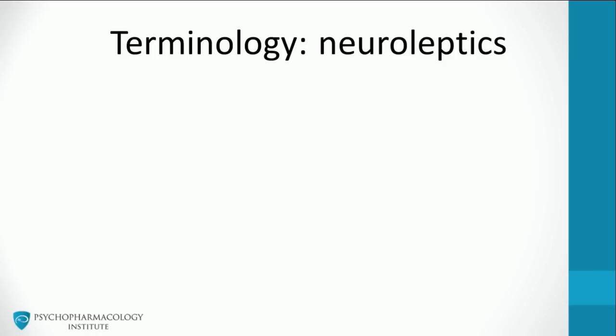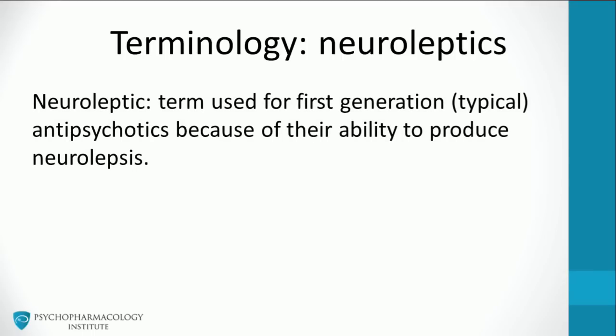I'd like to clarify some terminology. The terms neuroleptic, typical, and atypical are commonly used in practice. It is interesting to understand their background and meaning. The term neuroleptic refers to first generation antipsychotics such as chlorpromazine or haloperidol, because of their ability to produce neurolepsis.